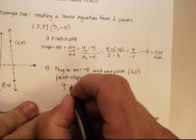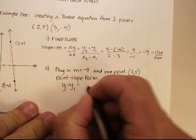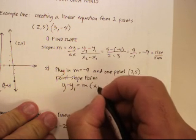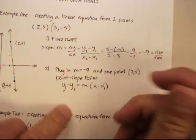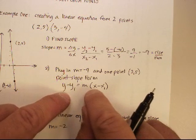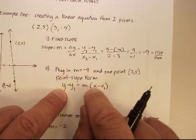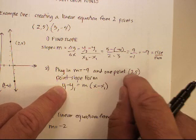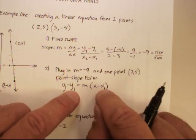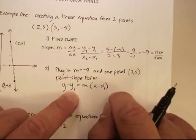The point slope form is y minus y1 is equal to m times x minus x1. Now, you'll notice that I don't have any little sub-numbers on this x and this y. That's because I'm not going to put any numbers in there. Where I'm going to put the x and the y are in the second ones, and then I put the slope there.